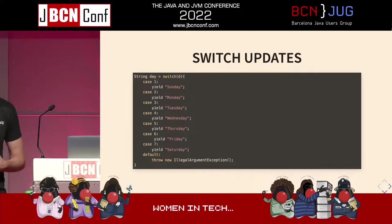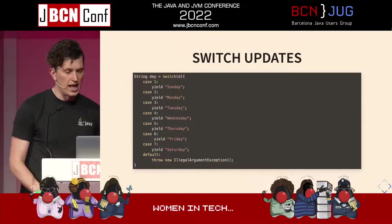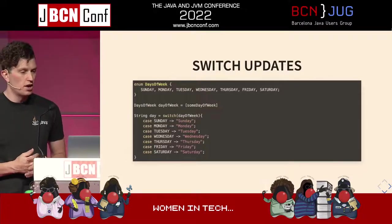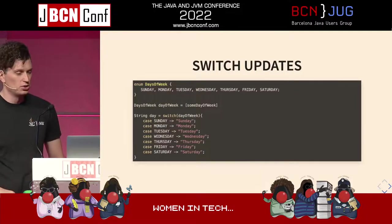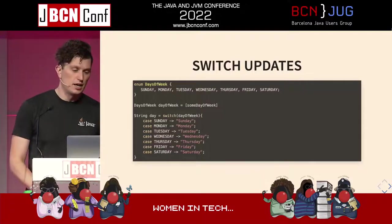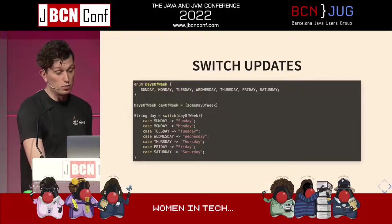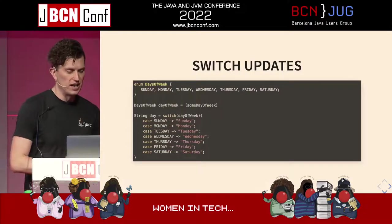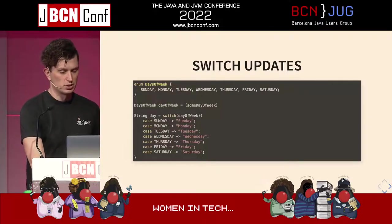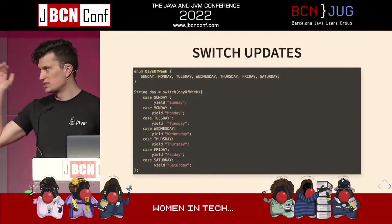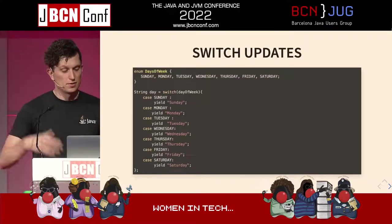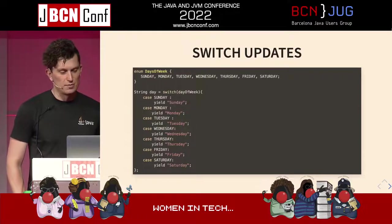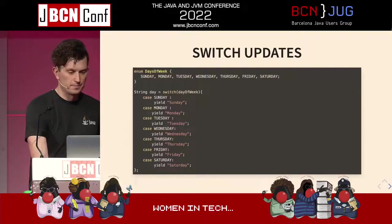You can also write a switch expression using the colon syntax, where each case ends with a yield. Switch expressions are exhaustive, so a default case is often needed. However, if you cover all the values of an enum within your switch expression, a default case is no longer needed. If you add another value to the enum, you get a compiler error saying the switch expression is no longer exhaustive. This isn't forcing everyone to use the new arrow operator — the colon syntax can still be valid and very useful.